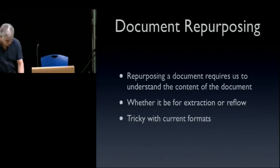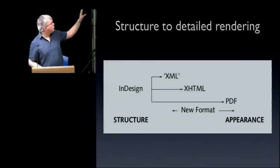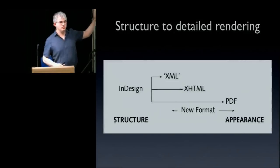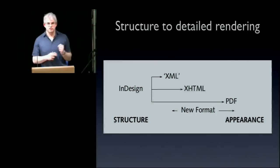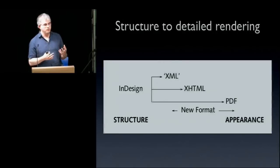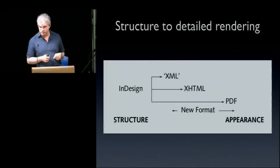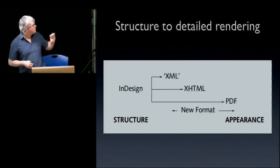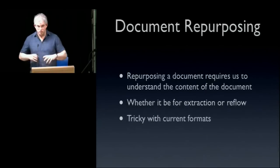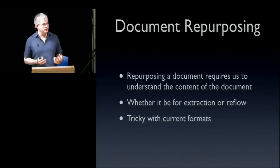The reason for the title 'Propping Open the Document Trap Door' is now becoming obvious. As we convert documents from structural representation — where we can repurpose and reflow — to an appearance or presentation-based form, it's like the document falls through a trap door and you lose enough information that trying to get back out from that point is very difficult. What we're effectively trying to do is prop open that trap door so that we can repurpose the document and reflow it to new things.